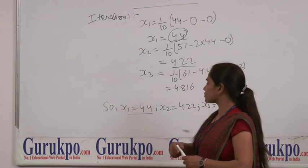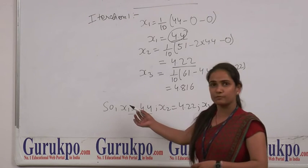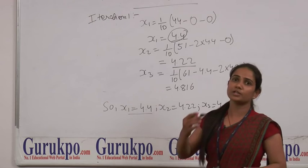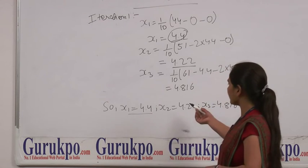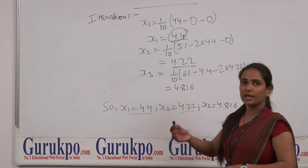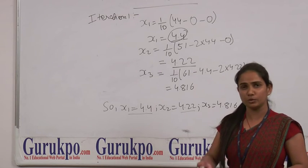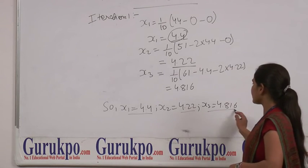In our second iteration, we will use x1 equals 4.4 and find out the new x1, and use x2 equals 4.22 and find out our next new x2, and same for x3.